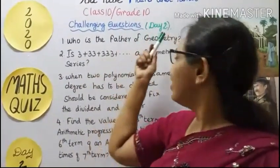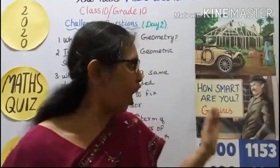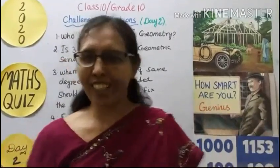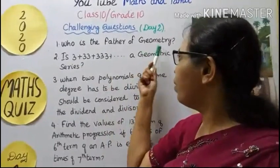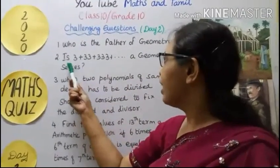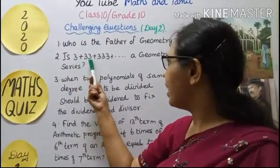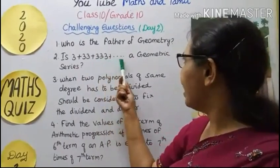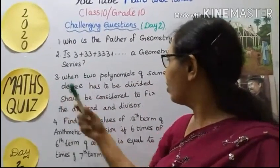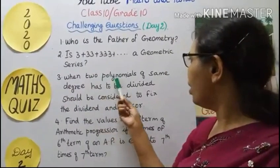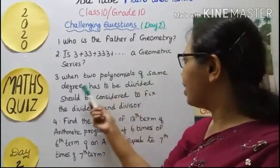How smart are you? Like genius? Question 1: Who is the father of geometry? Second question: Is 3 plus 33 plus 333, et cetera, a geometric series? Third question: When two polynomials of same degree have to be divided, what should be considered to fix the dividend and divisor?